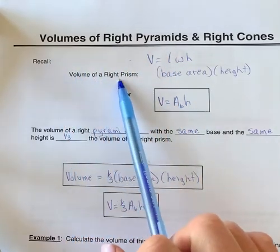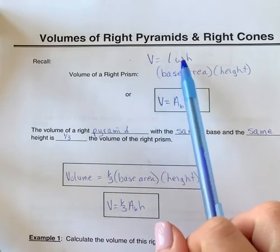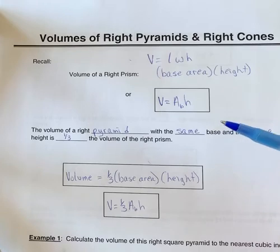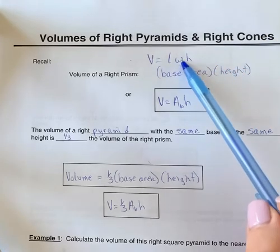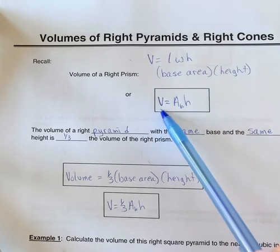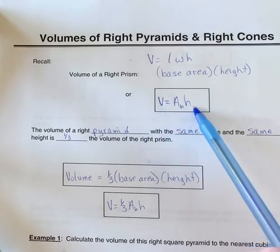Remember that if you have a right prism, the volume is length times width times height. So that is if you have like a cube or rectangular prism. Length and width can also be considered as the area of the base times height. So sometimes that formula is written as area of base times height.